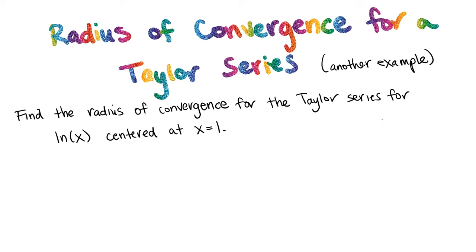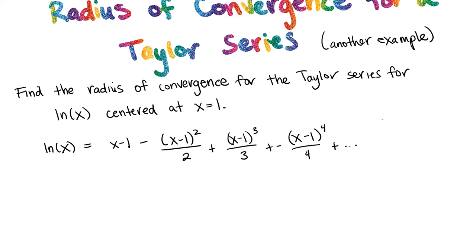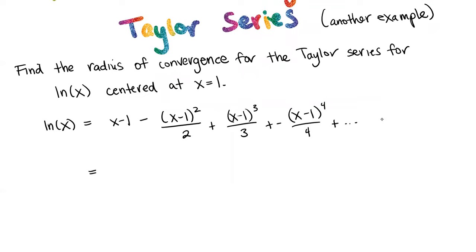So first thing we need is the Taylor series. I won't go through all the steps, but the natural log of x has this Taylor series: x minus 1, minus (x minus 1) squared over 2, plus (x minus 1) cubed over 3, minus (x minus 1) to the 4 over 4, plus dot dot dot. One thing that's useful to do at this point is to write it in summation notation, because our next step is going to be to use the ratio test. To use the ratio test, we need to know what the nth term of the series is, and writing it in summation notation helps us figure that out.